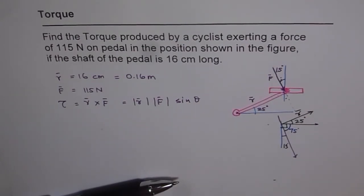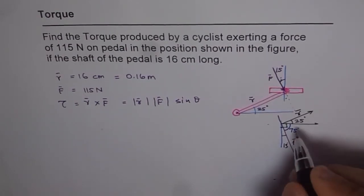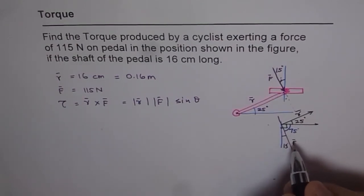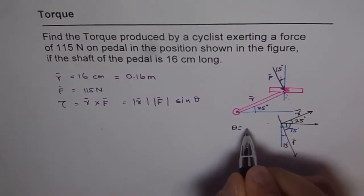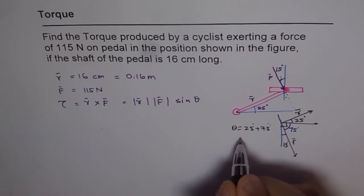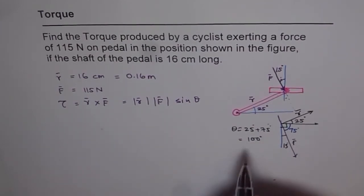So the angle between R and F. So this is our force F. So angle between R and F is 25 plus 75. So we get theta value from here which is 100. So theta for us is 25 degrees plus 75 degrees. And that gives us a value of 100 degrees. So we will use this value.